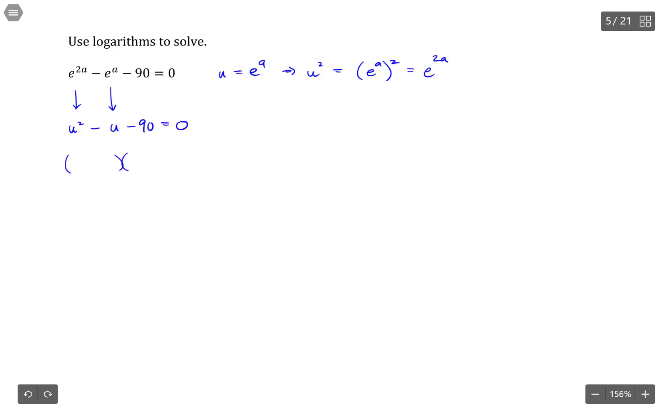Then if I can factor this, I can continue solving. So u times u would give me u squared. Two things that multiply together to give me 90, but then add up to 1. Well, 10 and 9 are probably pretty good options, because if the 10 is negative and the 9 is positive, they multiply to negative 90, but then add to negative 1.